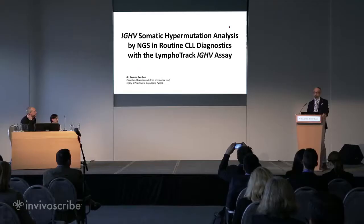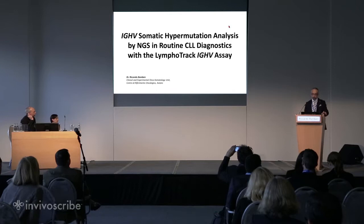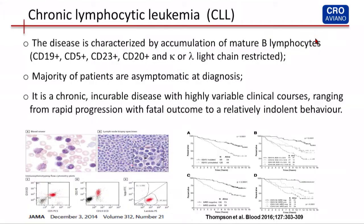Good afternoon. To start, just a brief introduction on chronic lymphocytic leukemia. CLL is the most common leukemia in the Western world. It's a chronic incurable disease — we will now see with a new therapy, very promising — and with a very variable clinical behavior.